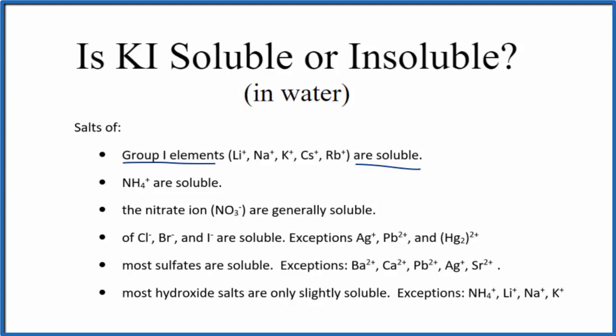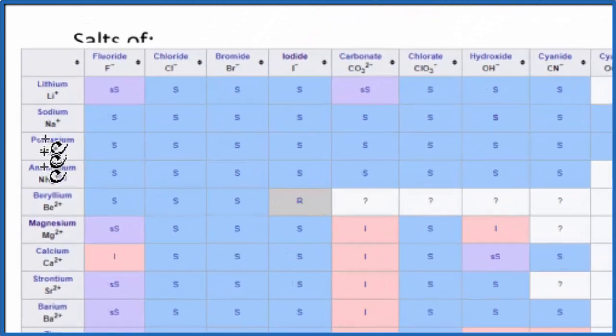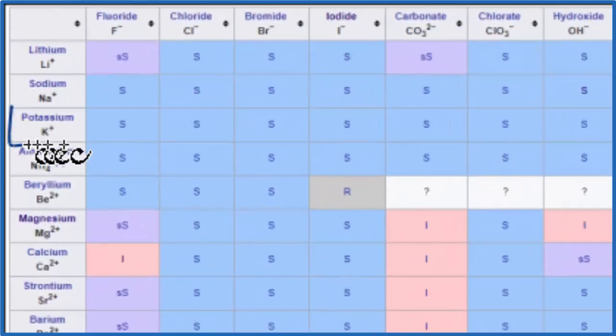We could also take a look at a solubility chart. Let's pull this in and we're going to look for potassium with the positive ions. There's potassium right there, K+.